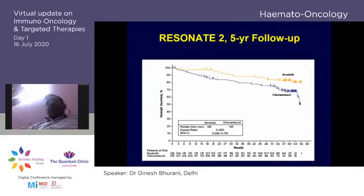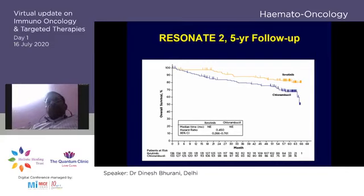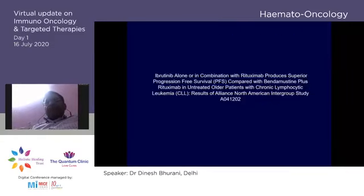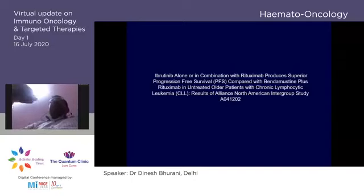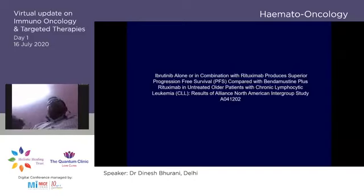Five-year follow-up data shows a significant difference in overall survival for ibrutinib in comparison to chlorambucil. There is also data comparing R-bendamustine to ibrutinib, showing ibrutinib is superior.